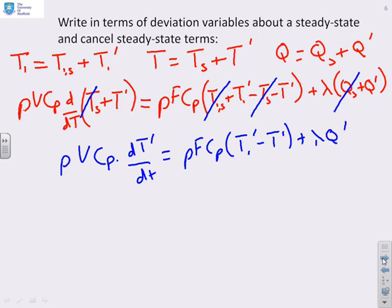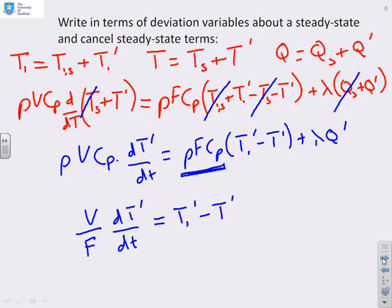Now a final change that I'm going to make is to rearrange some of these variables in order to get the system into what you might call time constant form. So what I want to do is divide through by this component here. So the coefficient of the T's is just one. So if I do that, if I divide throughout by ρFCp, I get (V/F)(dT'/dt) equals T_i' - T' + λ/(ρFCp) into Q'. So that's sort of in a time constant form.